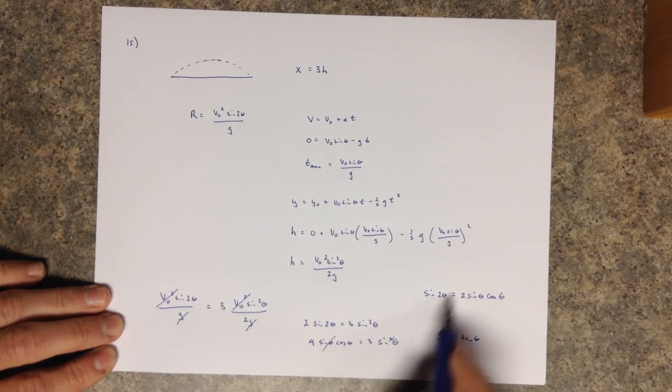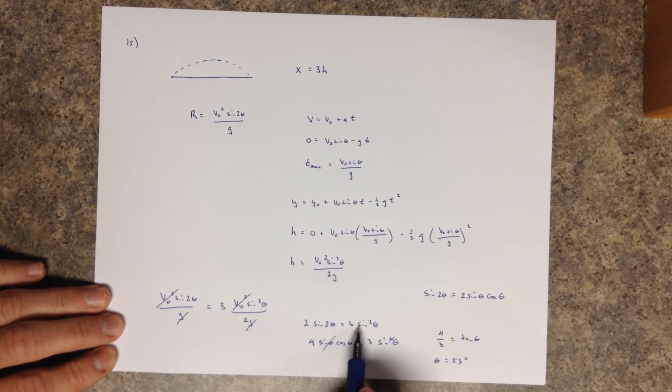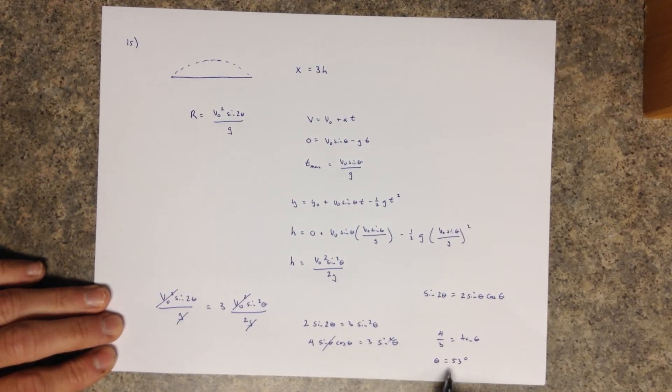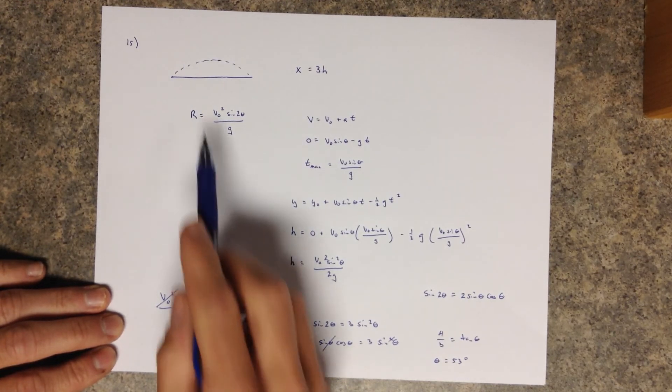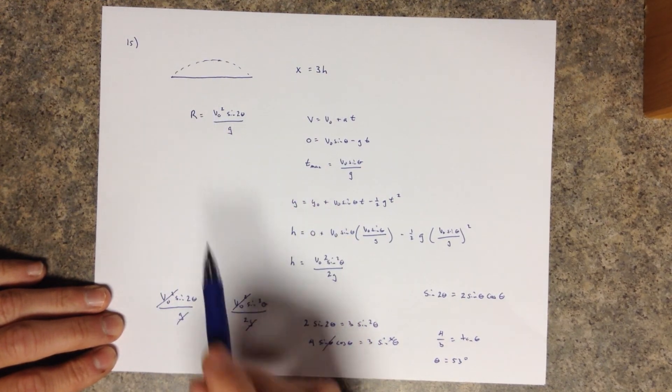If you don't like this trig substitution because you didn't know this identity, you could just graph this and graph this and find the angle. And again, the angle ends up being 53 degrees. So that if you launch it at 53 degrees, independent of how fast you launch it, you're for sure going to get 3 times the range as you do the height.